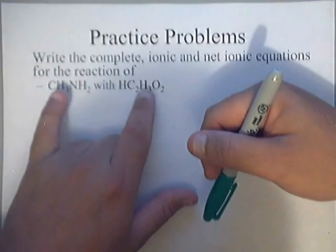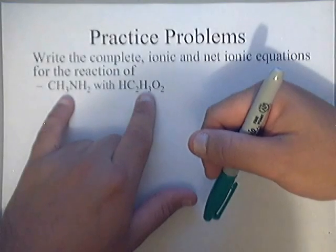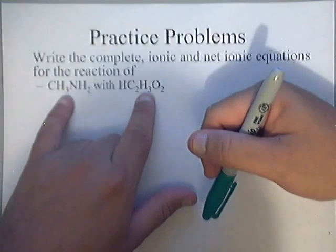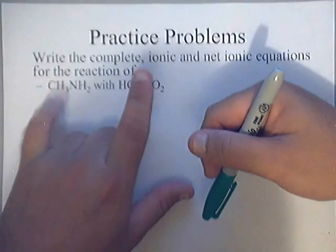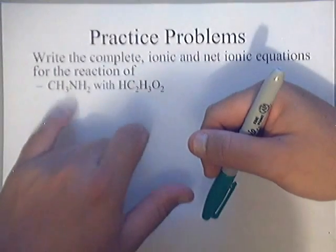Now also, with us dealing with a weak base and a weak acid, when we get ready to write the ionic and net ionic equations, we cannot dissociate the weak acid and the weak base. Now of course, for scratch work purposes, I'm going to show the breakdown of ions of my acid. I'm not going to show it on my base, and I'll explain that when we get started.